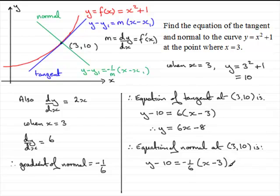If you wanted to put this into the form ax plus by plus c equals 0, then I'll times through by 6, that gives 6y minus 60 equals minus 1 times x minus 3, which when you expand the bracket gives minus x plus 3. If you rearrange by adding x and taking 3 from both sides, you get a final answer of x plus 6y minus 63 equals 0.